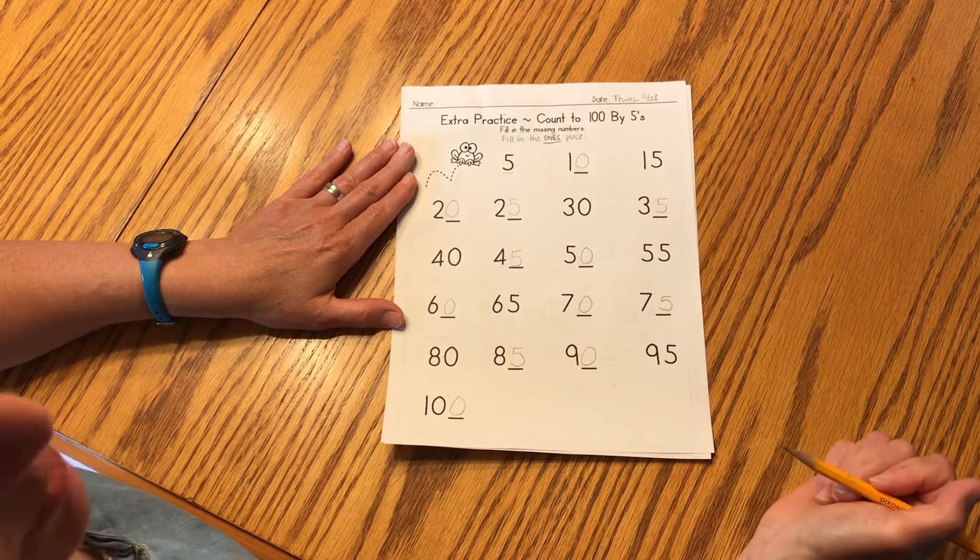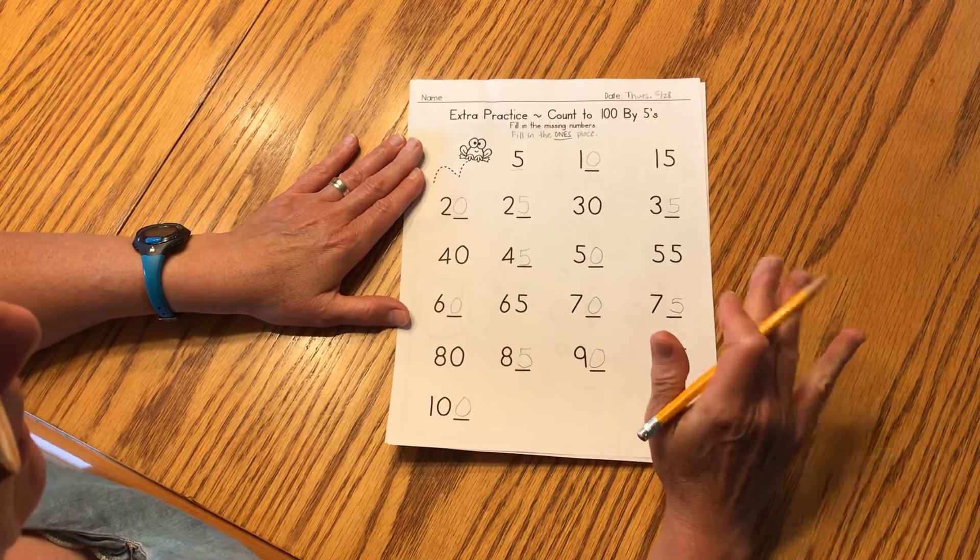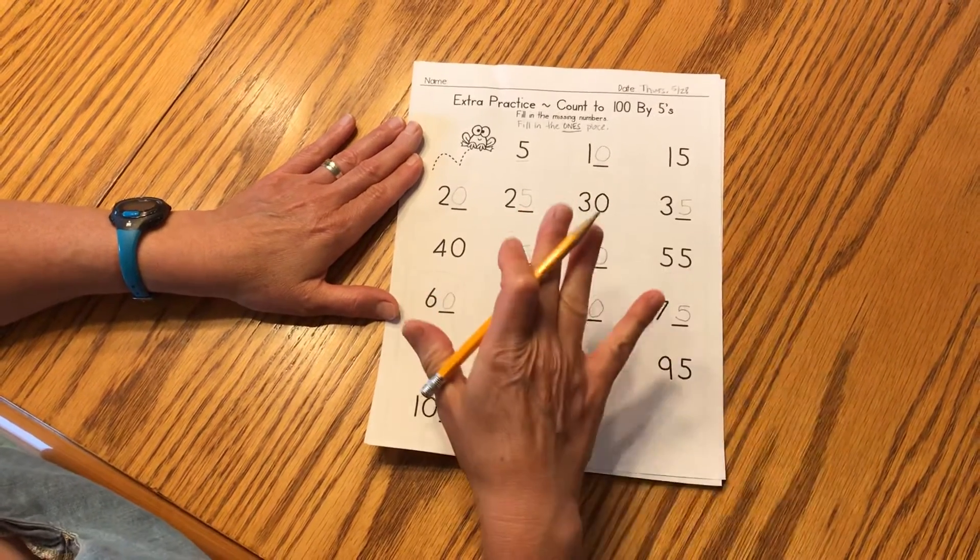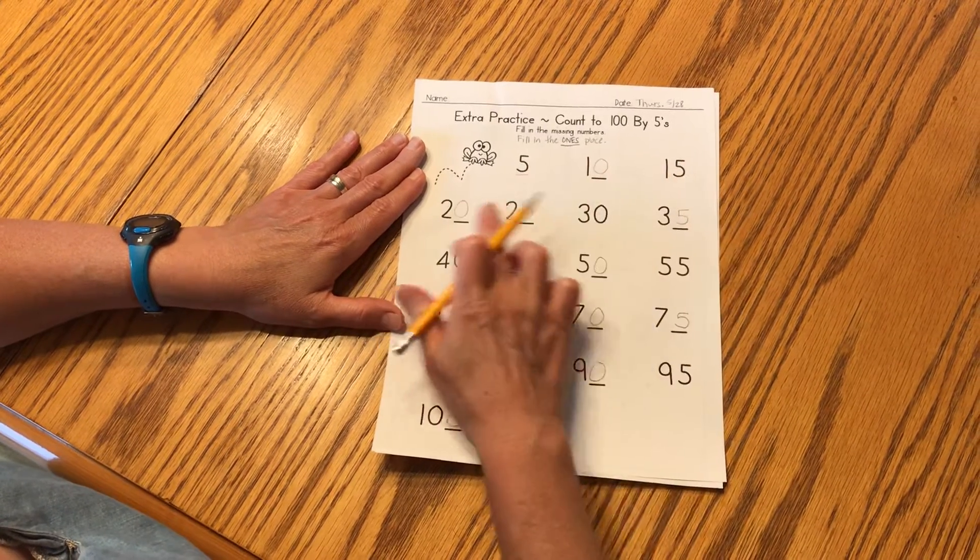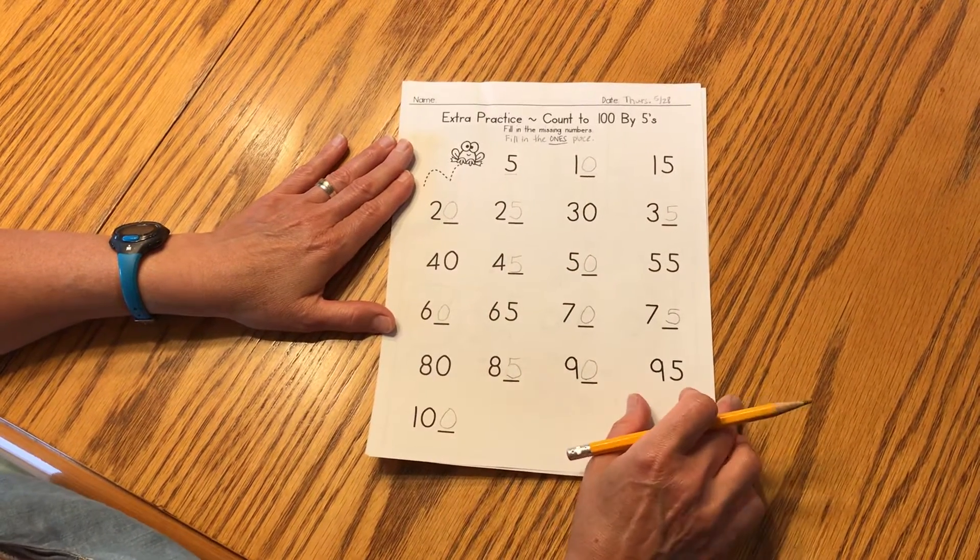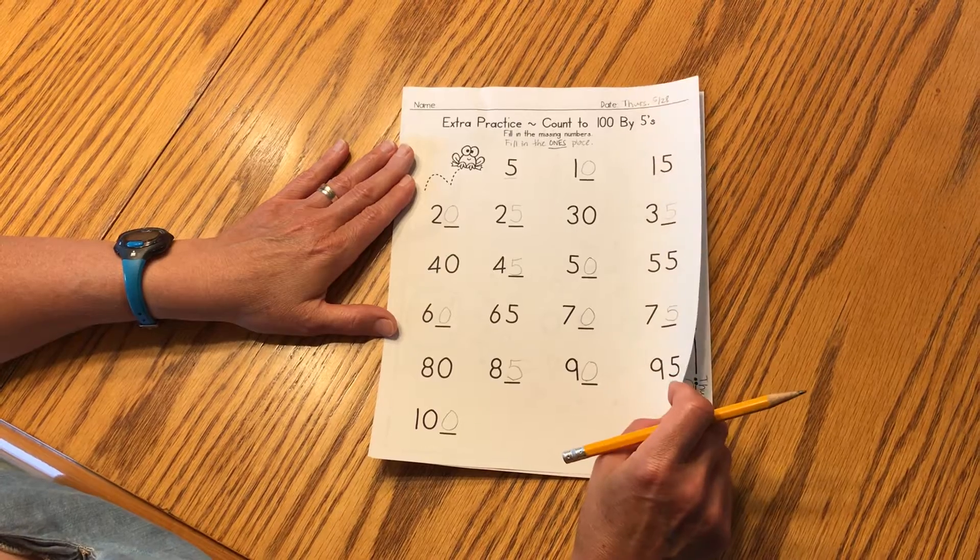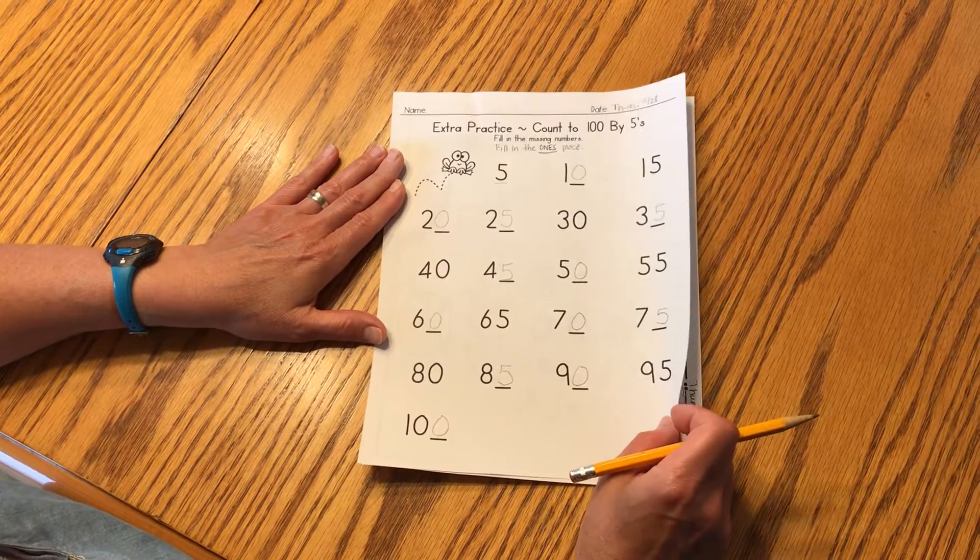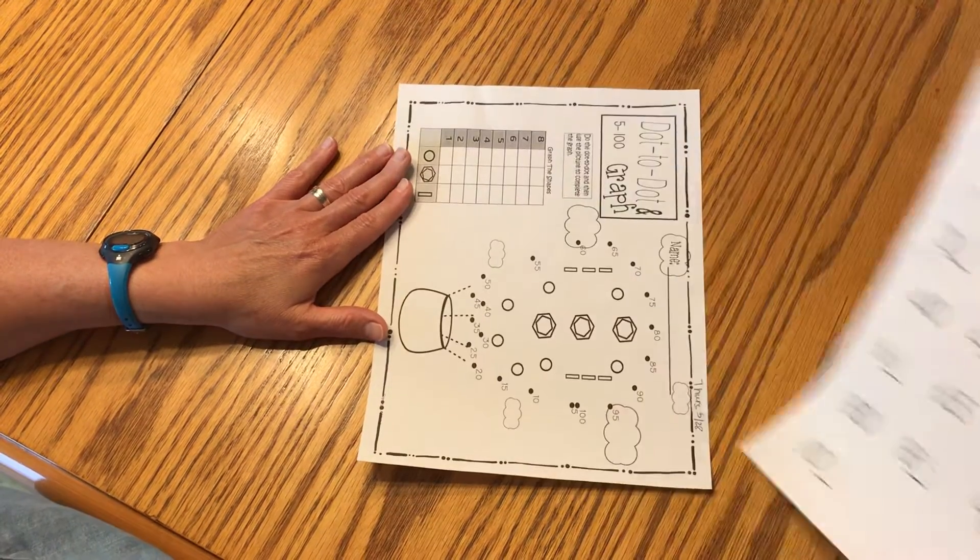So look at those ones places, boys and girls, and notice that pattern. If you need more practice, touch and count by fives one or two more times before you start the next paper. If you need more practice, hit pause and practice now.